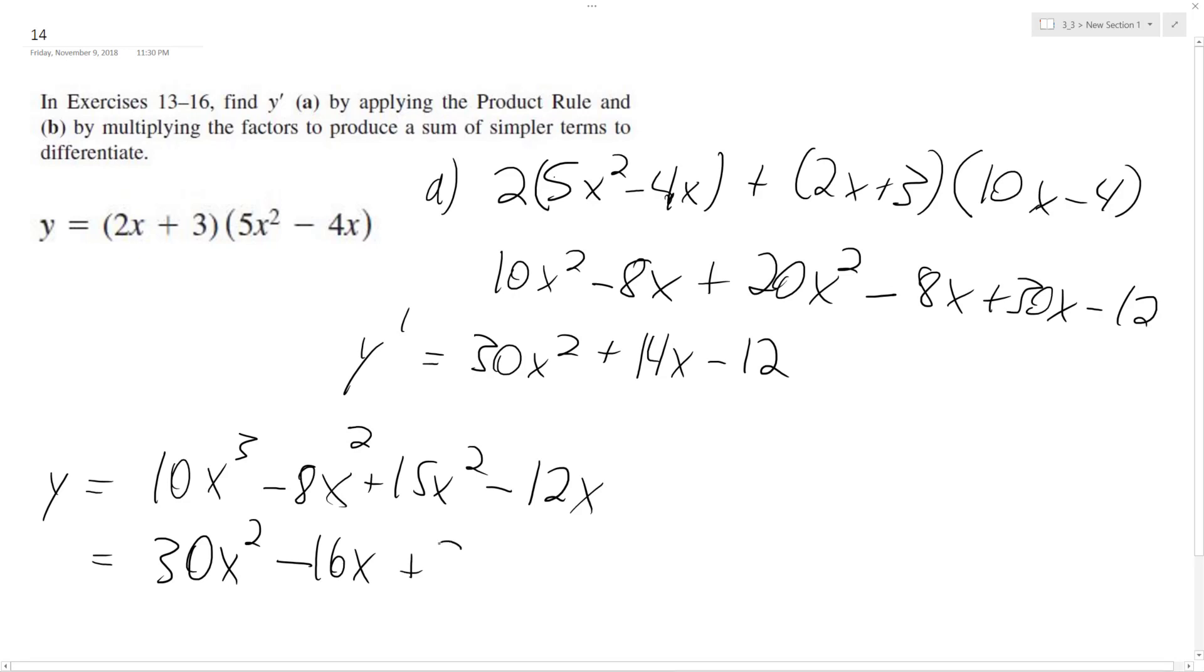Minus 16x plus 30x minus 12. And then you combine everything for y prime. You end up with 30x squared plus 14x minus 12, which is what we had when we did the product rule.